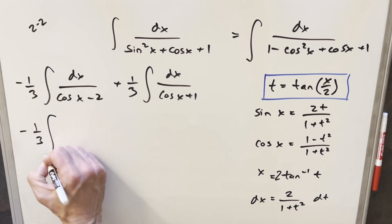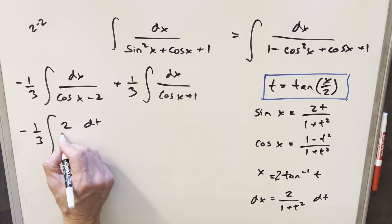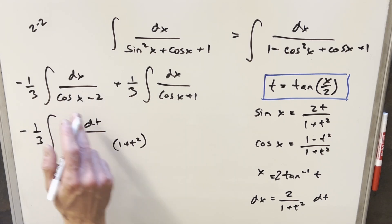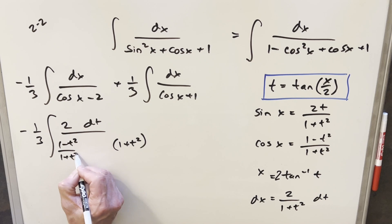So we'll go ahead with this. For our dx value, I'm going to write this. We'll write the 2 dt in the numerator. I'm going to bring the 1 plus t squared down here. Then for our cosine x, we have 1 minus t squared over 1 plus t squared, and then we'll just have our minus 2. Let me put parentheses around this whole thing.